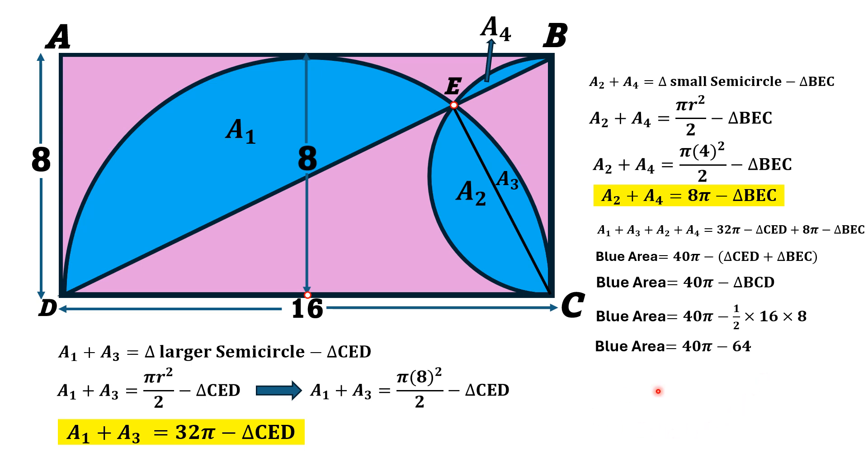And if we simplify it through calculator, we will get area of blue shaded region as 61.664 square units. That is the answer.